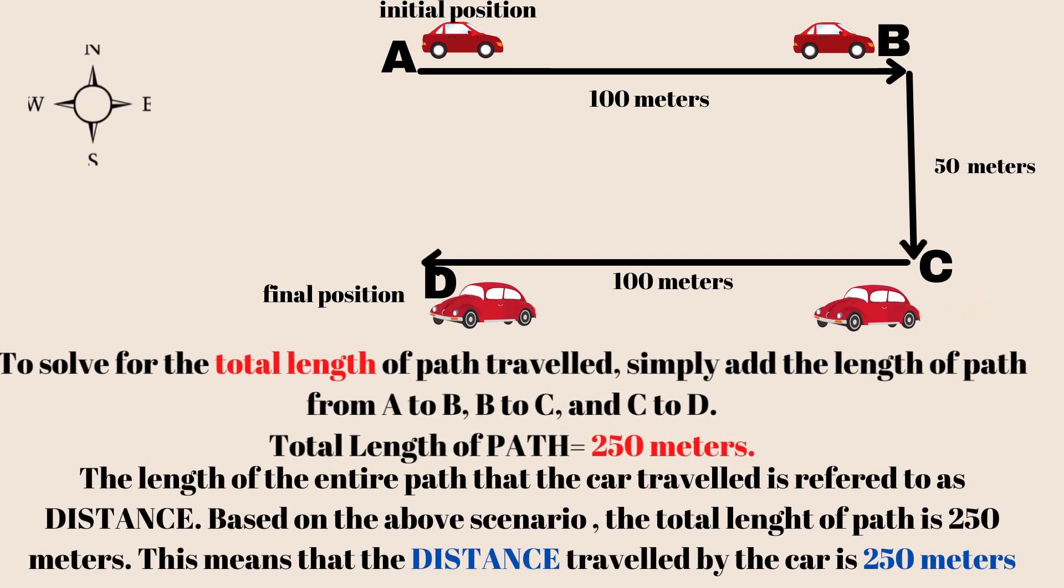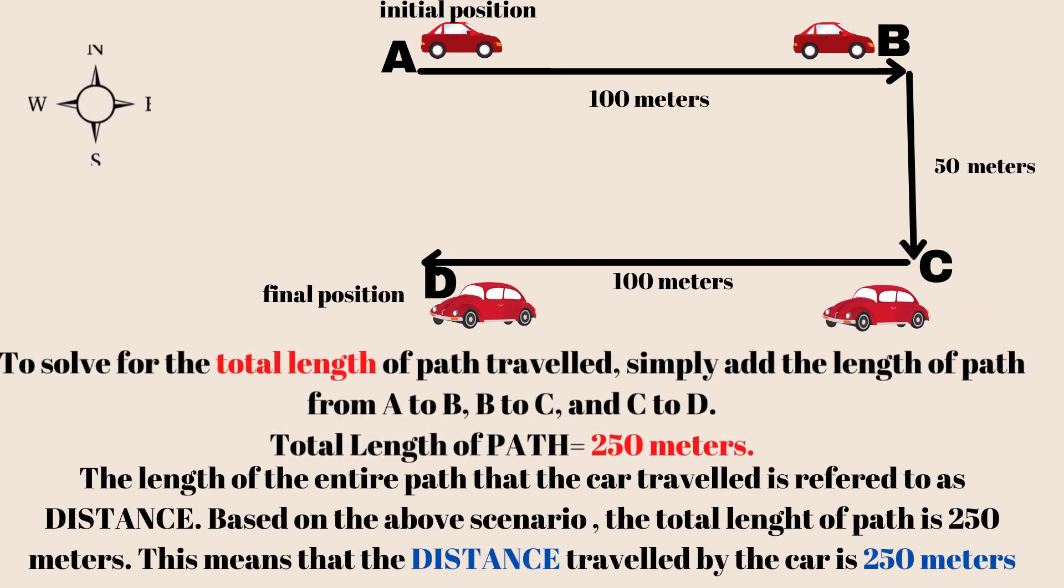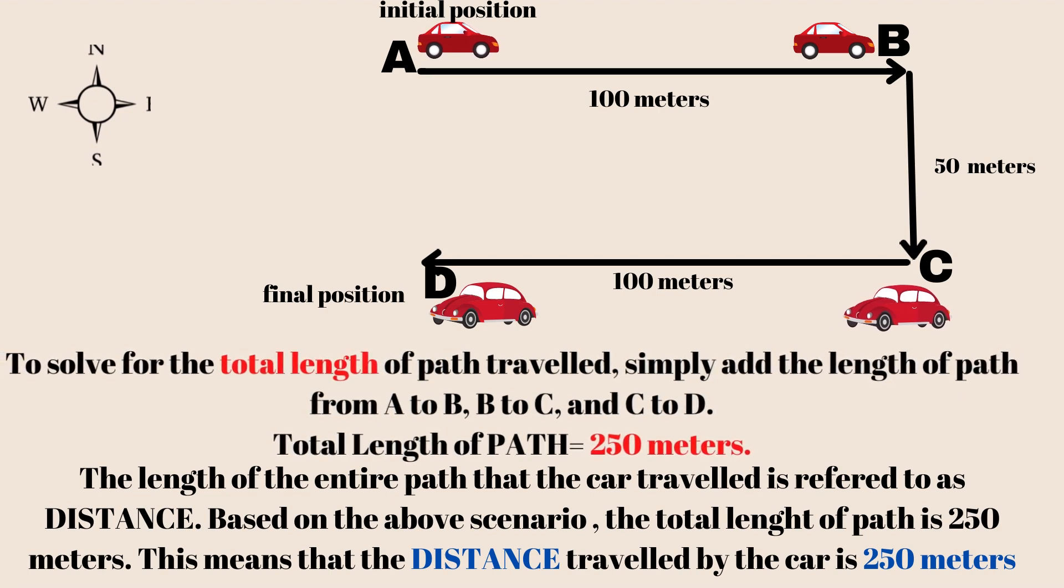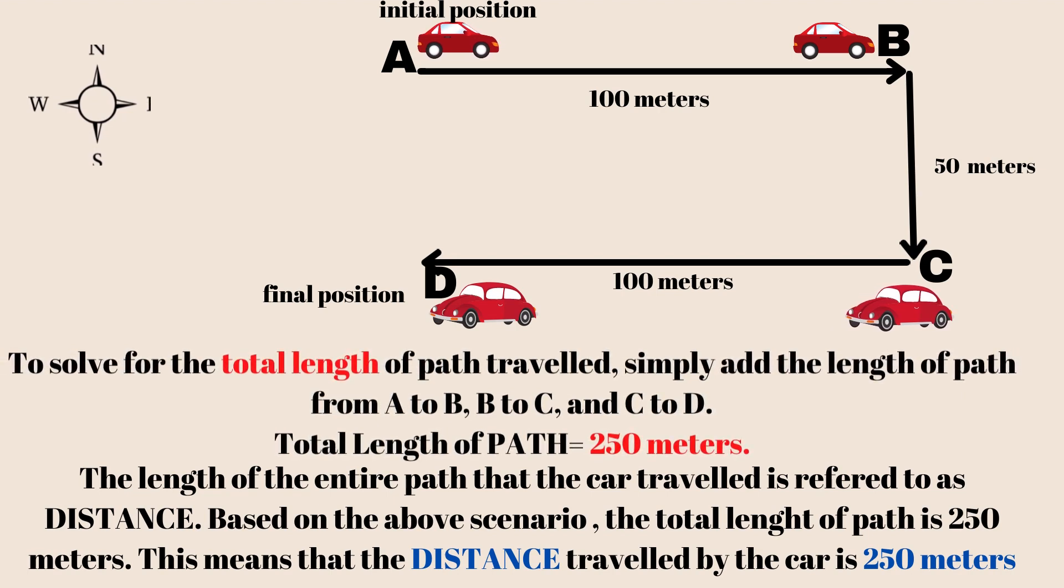The length of the entire path that the car traveled is referred to as distance. Based on the above scenario, the total length of path is 250 meters. This means that the distance traveled by the car is 250 meters.